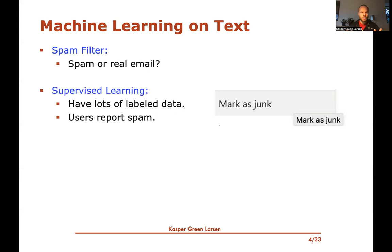Whenever you do this, the users have already reported these emails were actually spam — the users believe them to be spam. So you have lots of training data available where you know it's junk. And even without users telling you that a real email is real, the ones that are not being classified as spam, and also the ones that you reply to, would typically be non-spam emails. So you have lots of labeled data — lots of emails that you know are spam, and even more emails that you know are real.